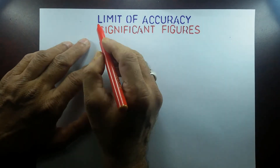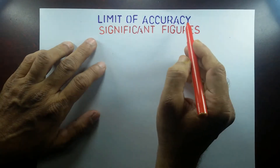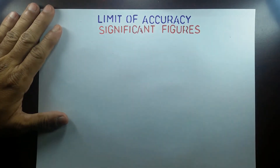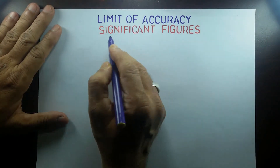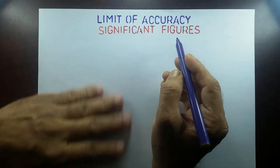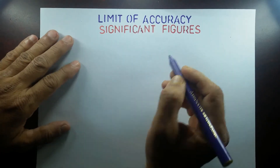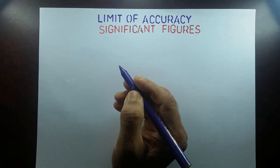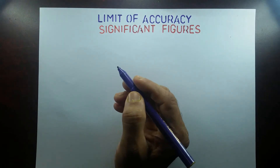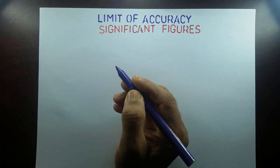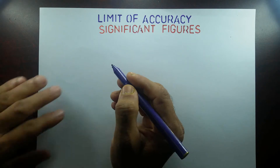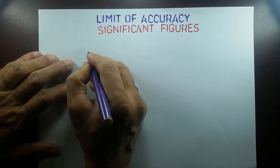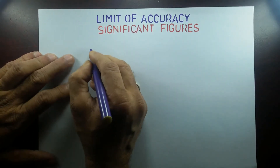Good morning students. This is 'Limit of Accuracy: Significant Figures,' the second video of this series. Today I'm going to talk about significant figures — how to write them down and what the rules are for writing them. You have seen in my previous video how to round a number up or down. Now we're going to learn how to write down significant figures.